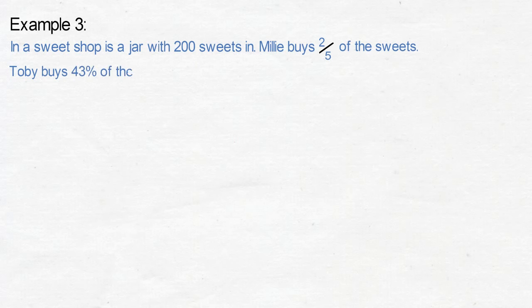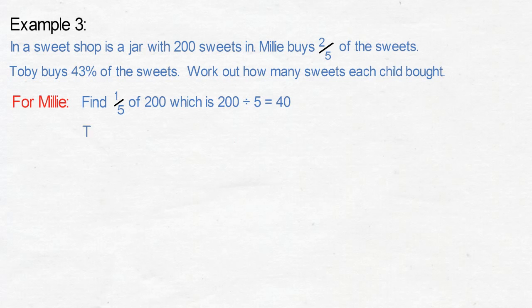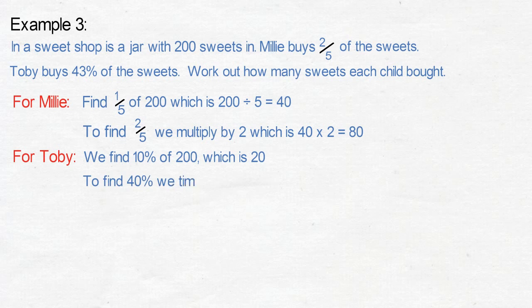Example three: in a sweet shop there is a jar with two hundred sweets. Millie buys two-fifths of the sweets and Toby buys forty-three percent of the sweets. For Millie, find one-fifth of two hundred: two hundred divided by five equals forty. To find two-fifths, multiply by two: forty times two equals eighty.